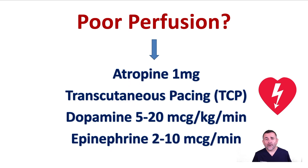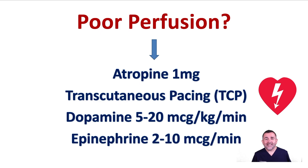Transcutaneous pacing uses electrodes on the chest to deliver electrical impulses that overwrite the heart's normal pacemaker function. It's important to know how to set up TCP with the device you have available. Dopamine stimulates the beta-1 adrenoreceptors, resulting in improved myocardial contractility, increased sinus node rate, and enhanced impulse conduction in the heart.